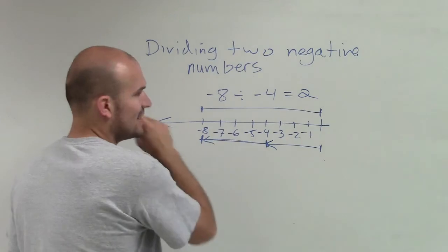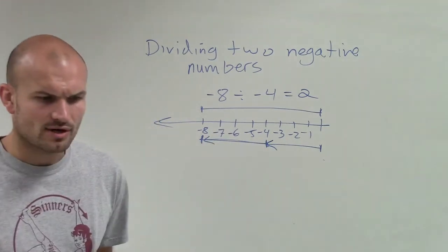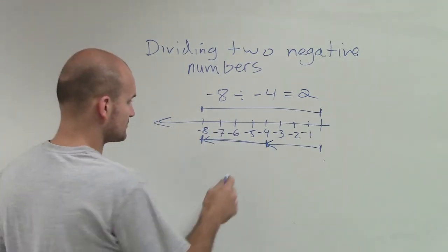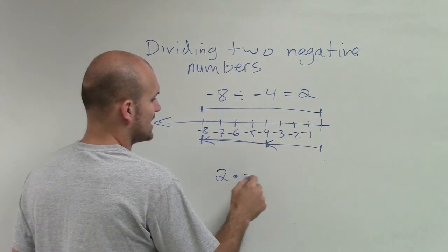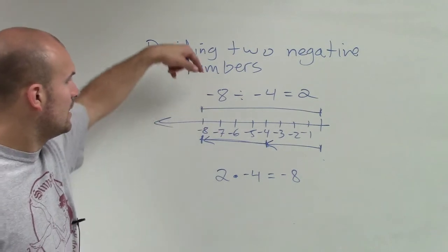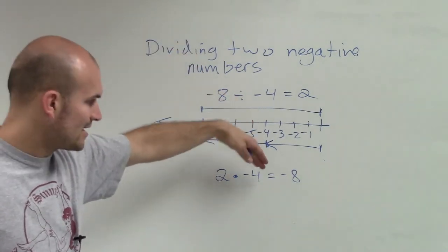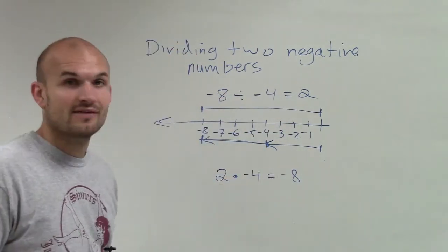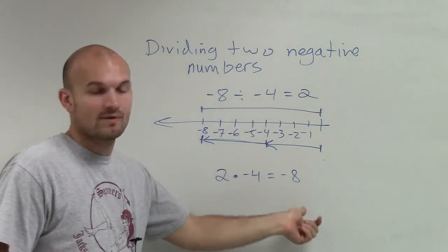And let's take a look at that and say, if that works, then that means that 2 times negative 4 equals negative 8. And when we remember dealing with multiplication, 2 times negative 4 does indeed equal negative 8, as a positive times a negative always equals a negative.